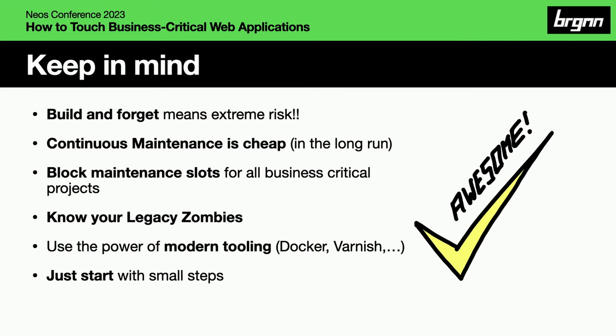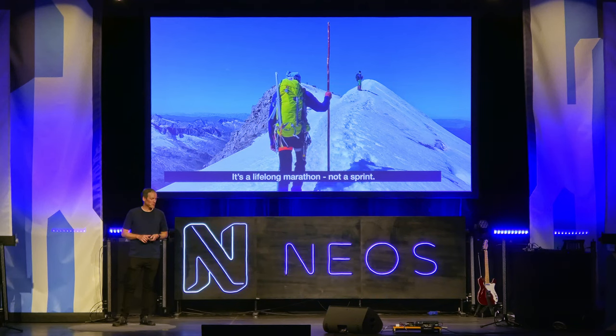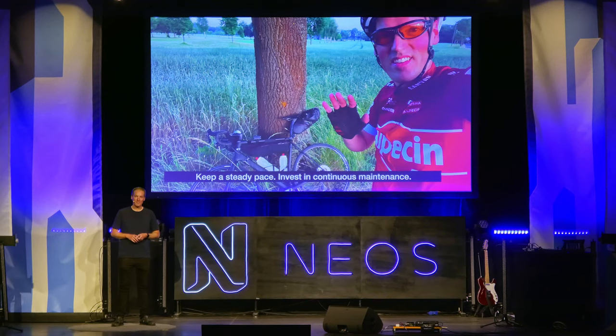My number one learning: block maintenance slots for everything — for every working product that earns you money, never stop maintaining. Know your legacy zombies. Use all that modern tooling even if your software stack is legacy — for example, you can use PHP 7 with Docker. Start with small steps. Building software is like many marathons — not sprinting and building features. Just keep a steady pace and invest in continuous maintenance. Thanks.